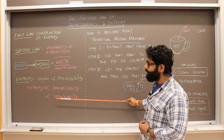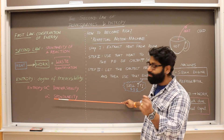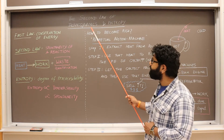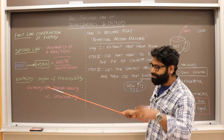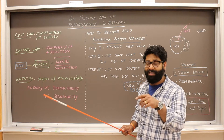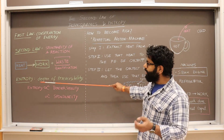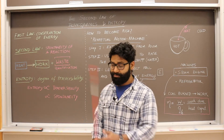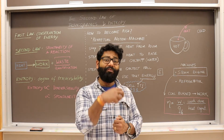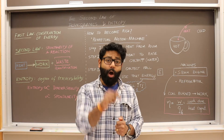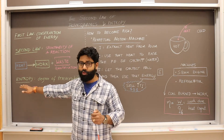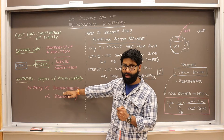Irreversibility and spontaneity are two similar concepts — things which are more spontaneous will be more irreversible. A new term introduced when studying the second law is entropy. Entropy is like a degree of irreversibility. A process which is more irreversible has a greater degree of irreversibility, is more spontaneous, and I will call it having more entropy.